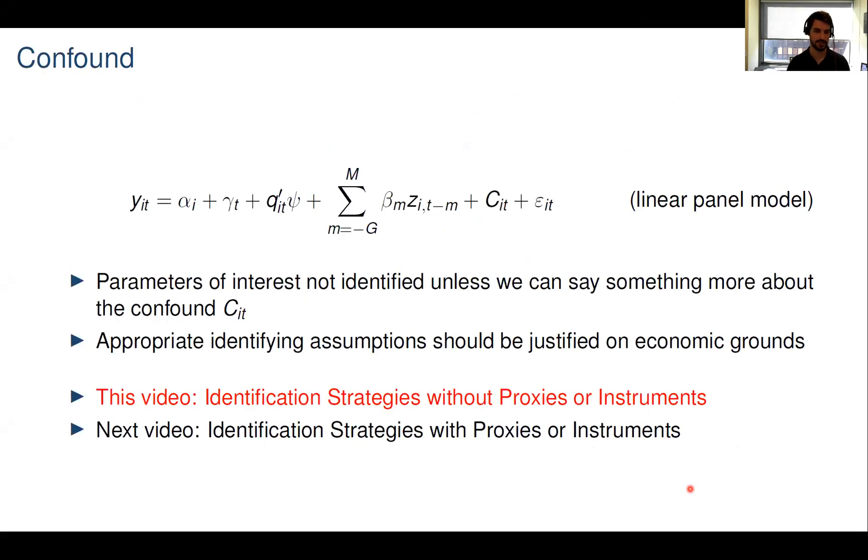The equation of interest looks as follows. We observe a panel dataset, where y_it denotes the outcome variable, alpha_i is a unit fixed effect, gamma_t is a time fixed effect, q_it are observed covariates. The policy variable is denoted by z, and it enters through leads and lags, thereby allowing for dynamic effects of the policy. Epsilon_it is a standard error term that we assume is well behaved and will largely ignore throughout the talk.